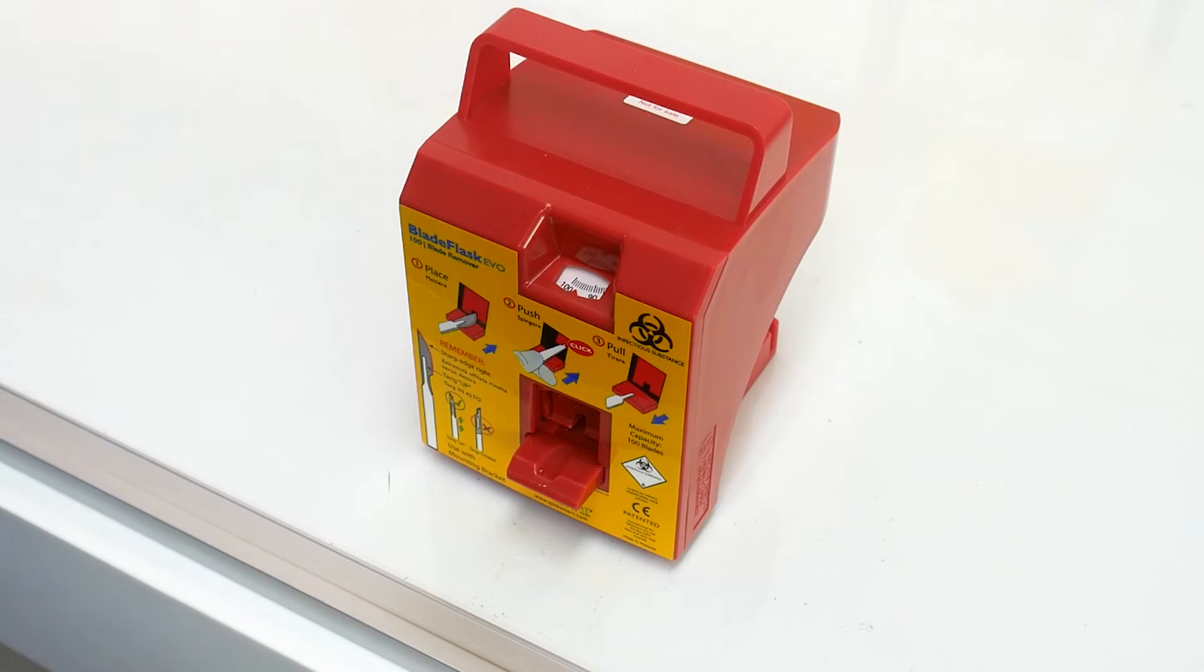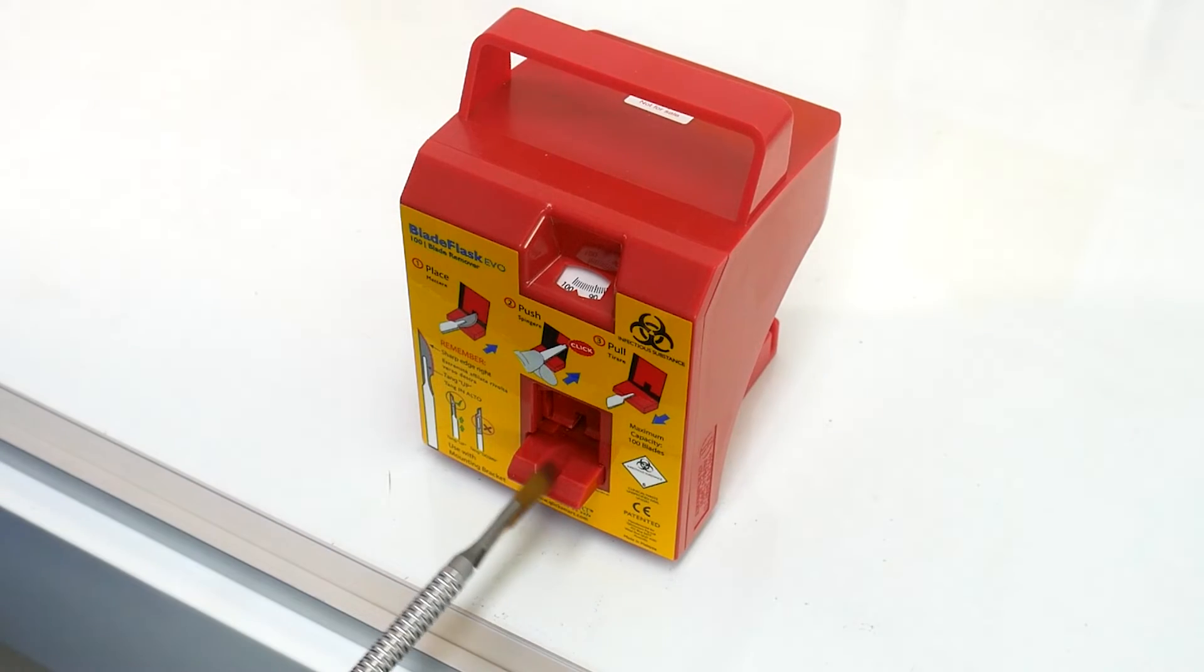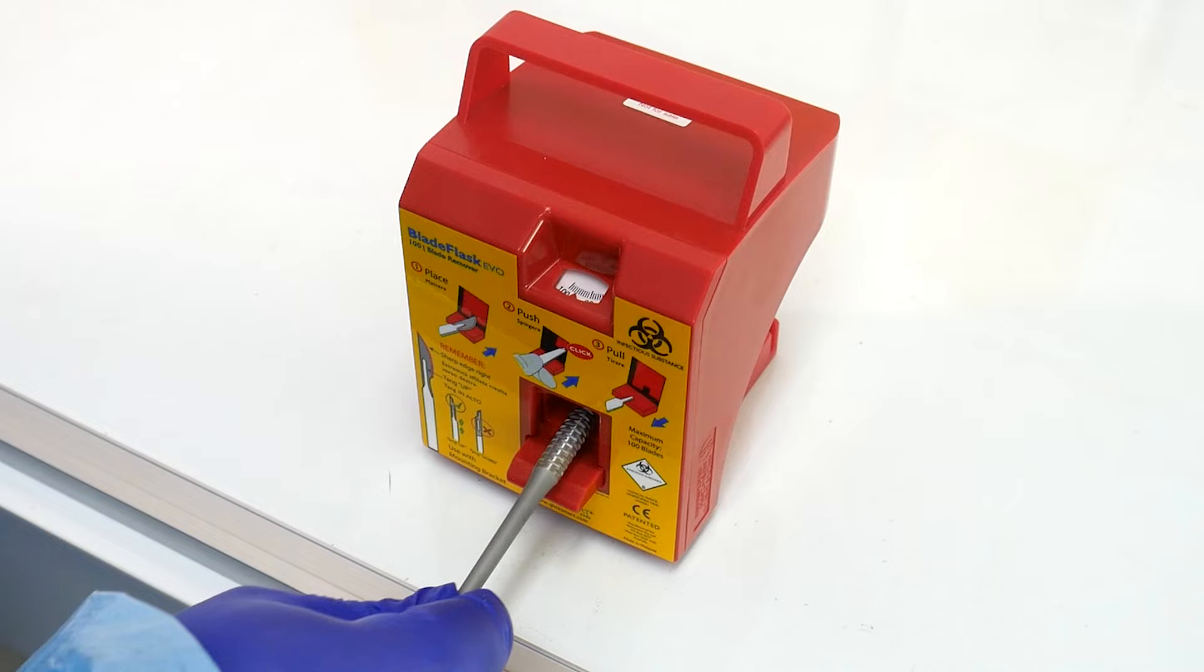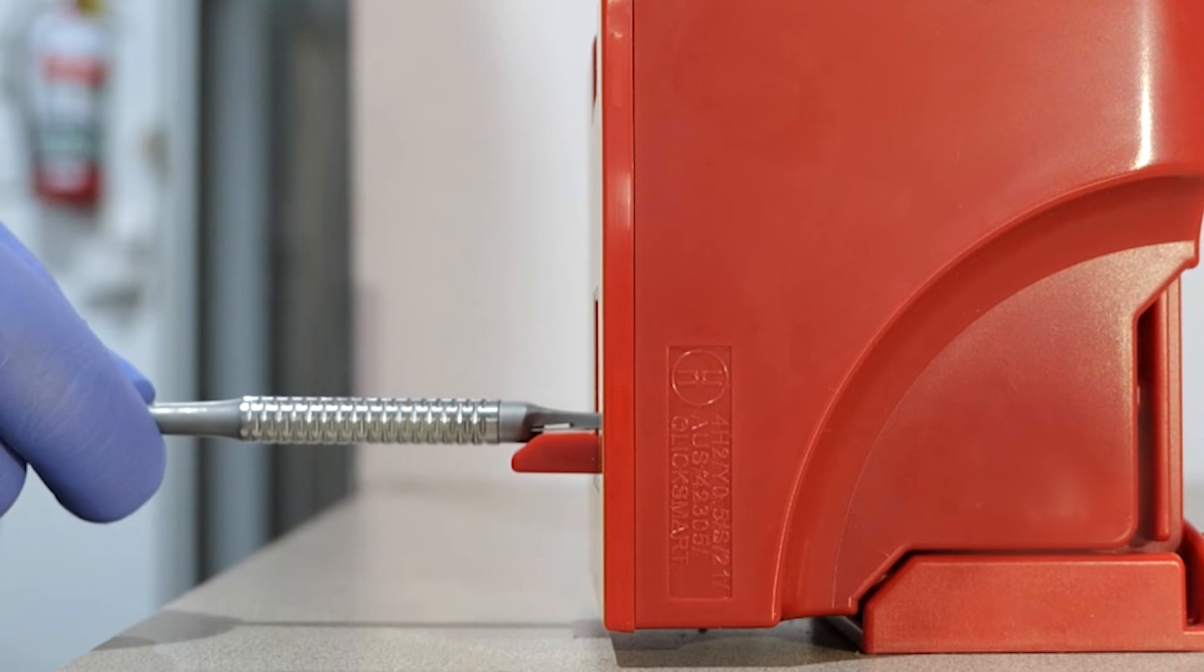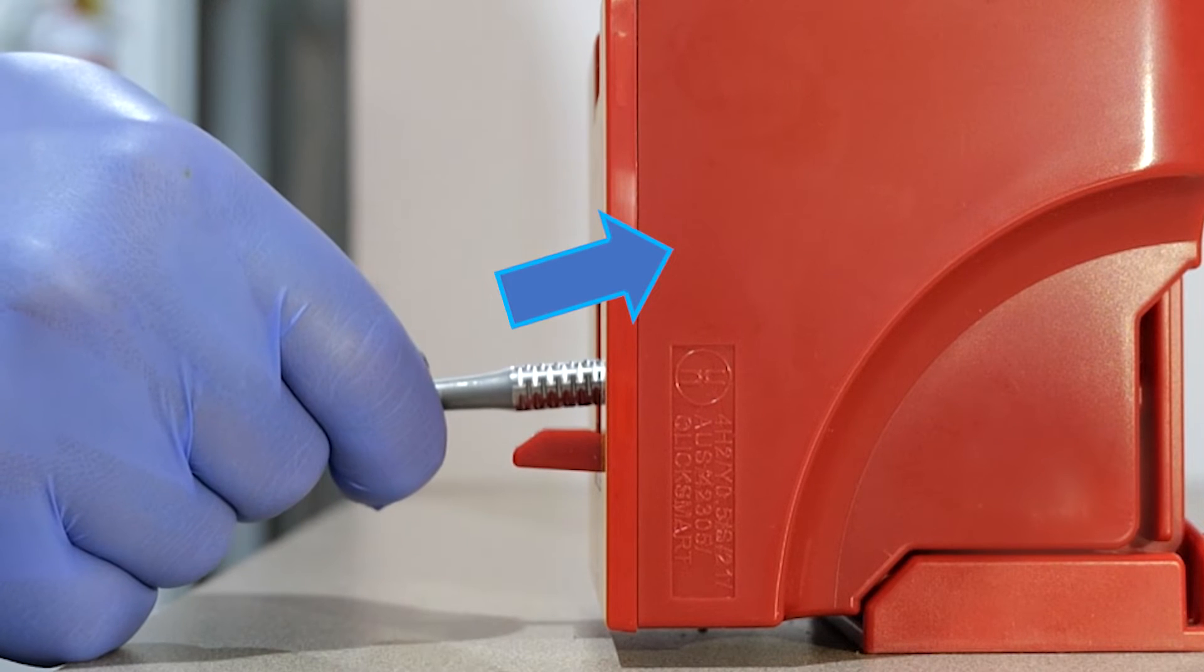Once mounted, your Blade Flask Evo is ready to use. Begin by placing the blade on the landing pad with the tang up and sharp edge facing right. Next, insert the scalpel handle into the Blade Flask Evo. Let the Blade Flask Evo's mechanism guide the scalpel handle up along the internal ramp until you hear a click.